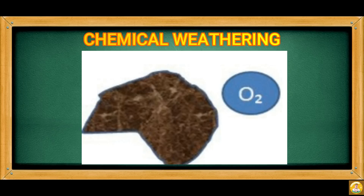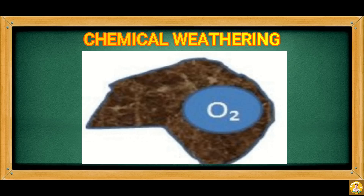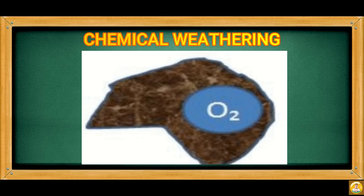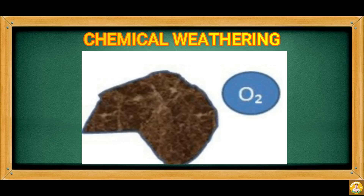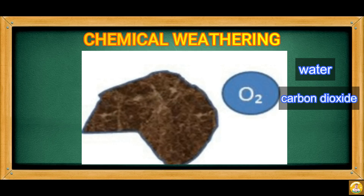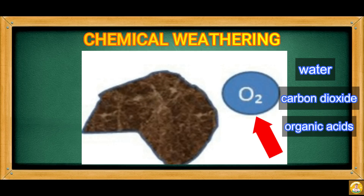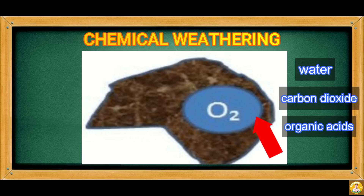Chemical weathering involves a change in the composition of rocks that allows them to break down into pieces. This happens when rocks break down due to reaction with water, carbon dioxide, oxygen, and organic acids. This process forms new substances from the minerals of rocks.